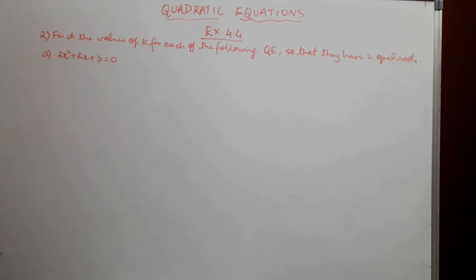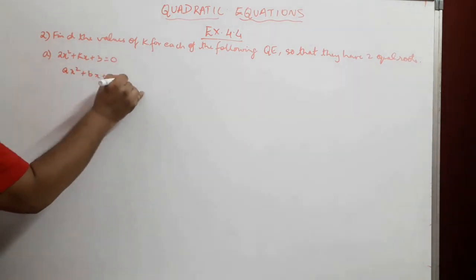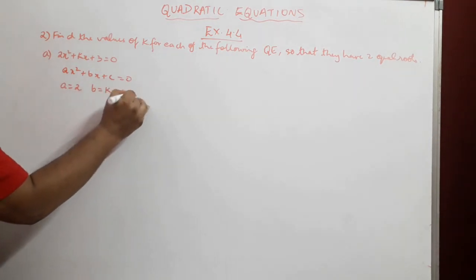Let us first compare the values over here with the general form, that is ax² + bx + c = 0. We get a = 2, b = k, c = 3.